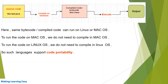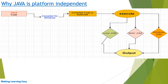This is the platform-independent language, and these languages support code portability — meaning you carry the compiled code from one platform to another and execute it there. Java supports code portability. Now let's see why Java is platform independent. On the left side you can see the Java source code with a .java extension, which is then compiled to get the bytecode.